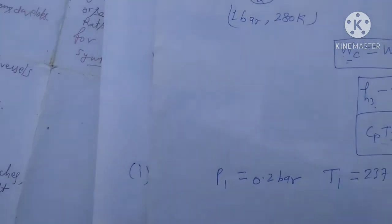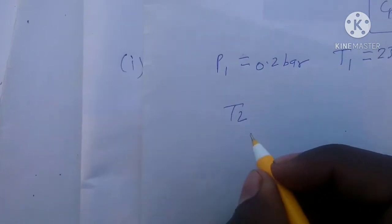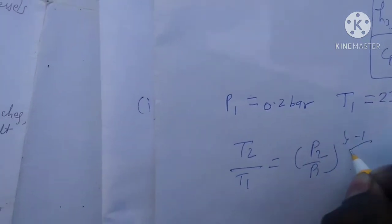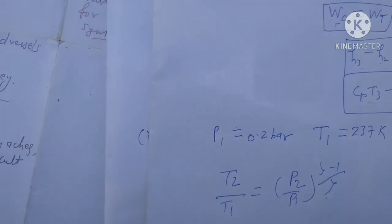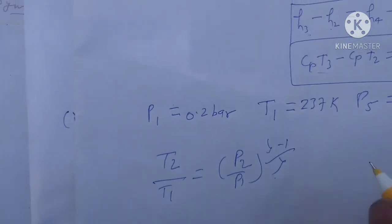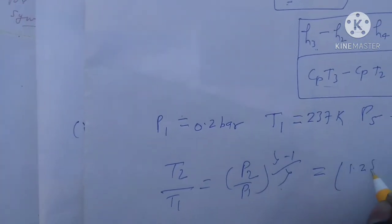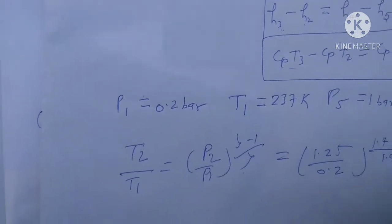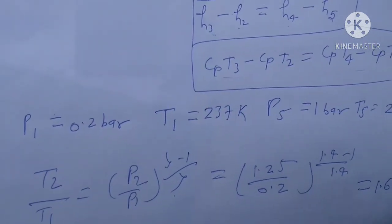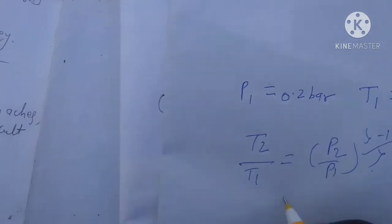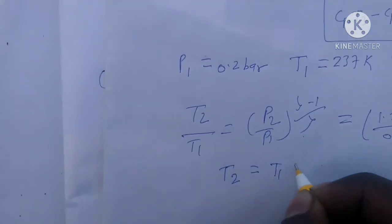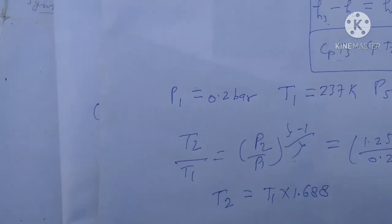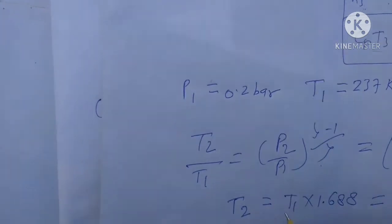First, we find compressor discharge pressure P3, which equals P4. Using the isentropic relation: T2/T1 = (P2/P1)^((γ-1)/γ), with γ = 1.4 for air. Substituting 1.25/0.2 raised to the power (1.4-1)/1.4, after calculation we get a ratio of 1.688. So T2 = T1 × 1.688 = 237 × 1.688 ≈ 400 Kelvin.